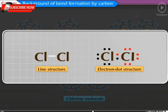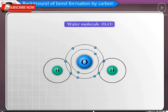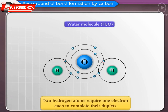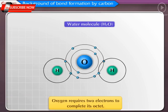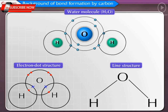The molecular formula of water is H₂O, with an oxygen atom at the center. Two hydrogen atoms each require one electron to complete their duplets, while oxygen requires two electrons to complete its octet. In the electron dot structure, electrons of oxygen are shown by dots and electrons of hydrogen by cross. In the line structure, water is represented by H−O−H (two single bonds).